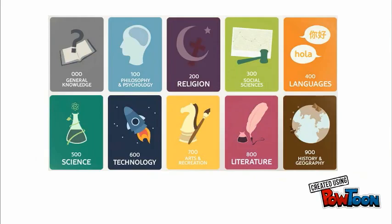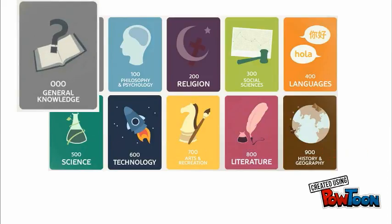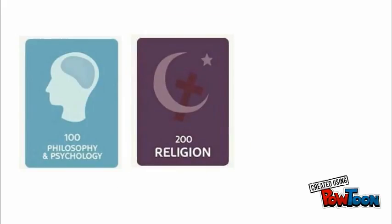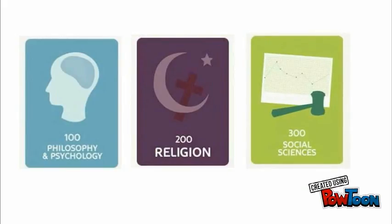There are 10 overall sections of the Dewey Decimal System, ranging from the zeros to the 900s. The zeros cover general knowledge. The 100s contain philosophy and psychology. The 200s contain religion. The 300s contain social sciences.